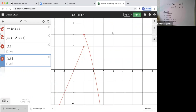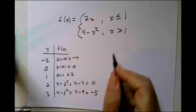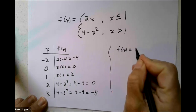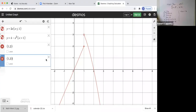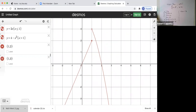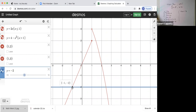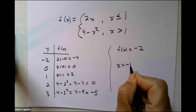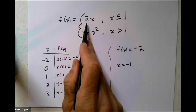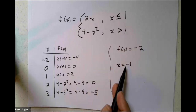Let's ask: when does f(x) equal negative 2? Looking at the graph, we want y to equal negative 2 and see where it crosses. It crosses at x equals negative 1, so that's one solution. Does that surprise us? Plugging negative 1 into the first branch: 2 times negative 1 is negative 2. Yes, x equals negative 1 is on the first branch and gives negative 2.